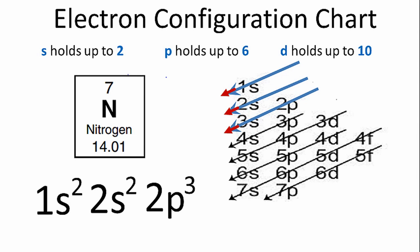If you look at the electron configuration for nitrogen, you can see that we have two plus two plus three. That equals seven electrons, which is the number of electrons for the nitrogen atom. So our configuration is 1s² 2s² 2p³.